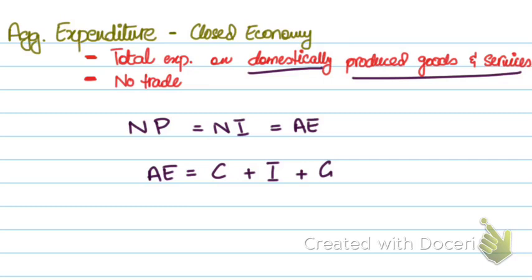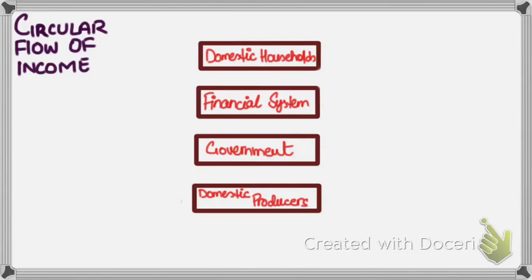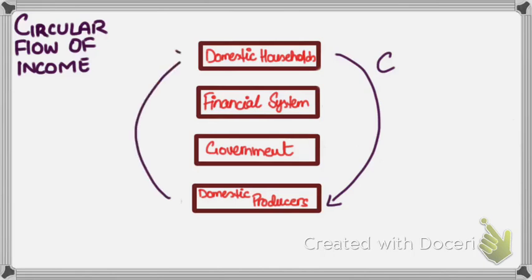Before we move deeper into what each component represents, let's talk about the circular flow of income in a closed economy. Production generates income, so domestic households spend on goods and services — this is consumption — and this consumption leads to income generation. Income is generated and we denote equilibrium income as Y. But because this is a mixed economy, there is involvement of the government, and a government's job is to take taxes.